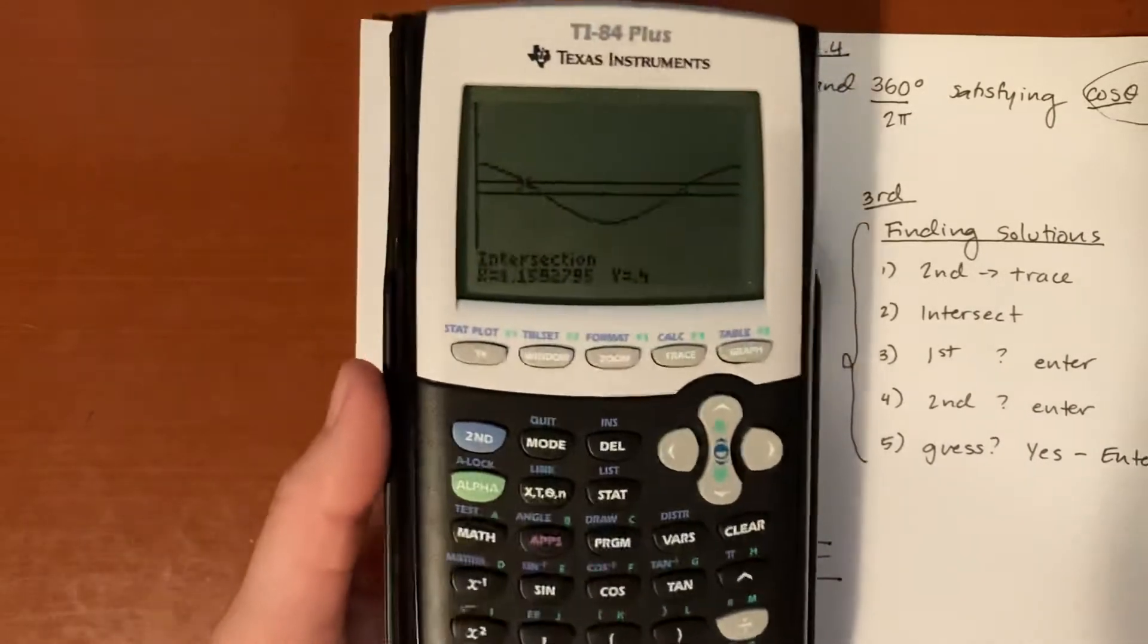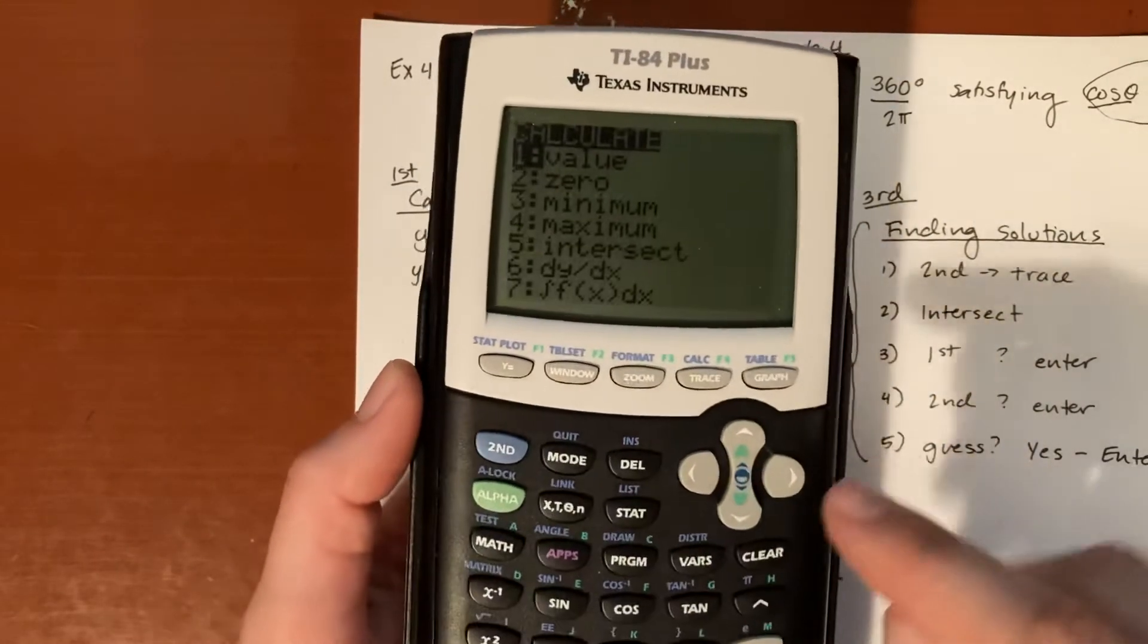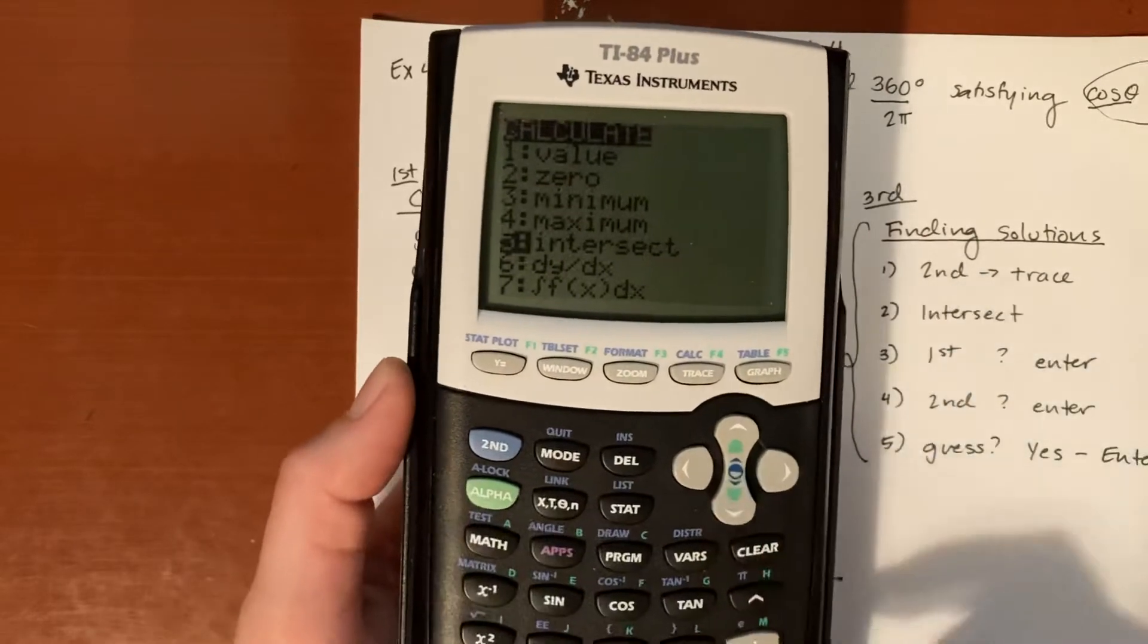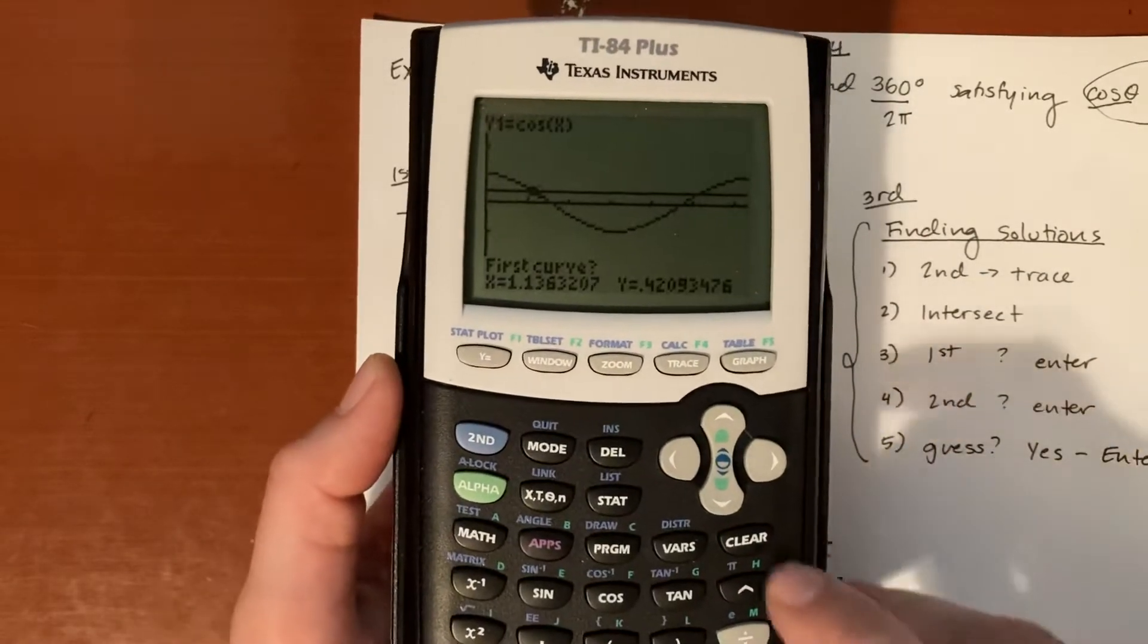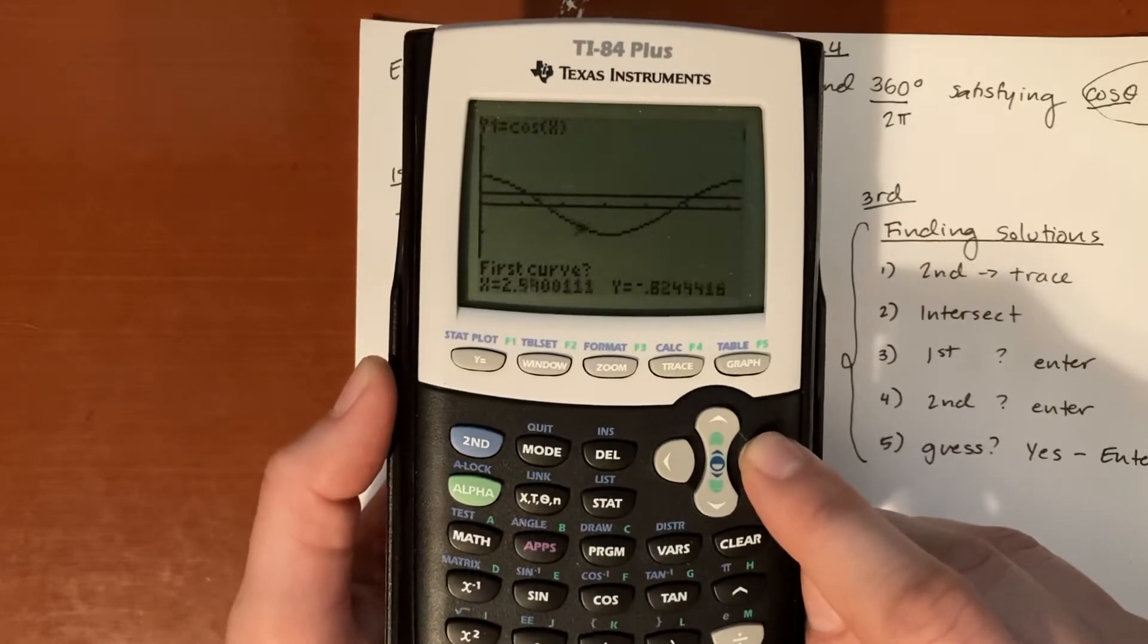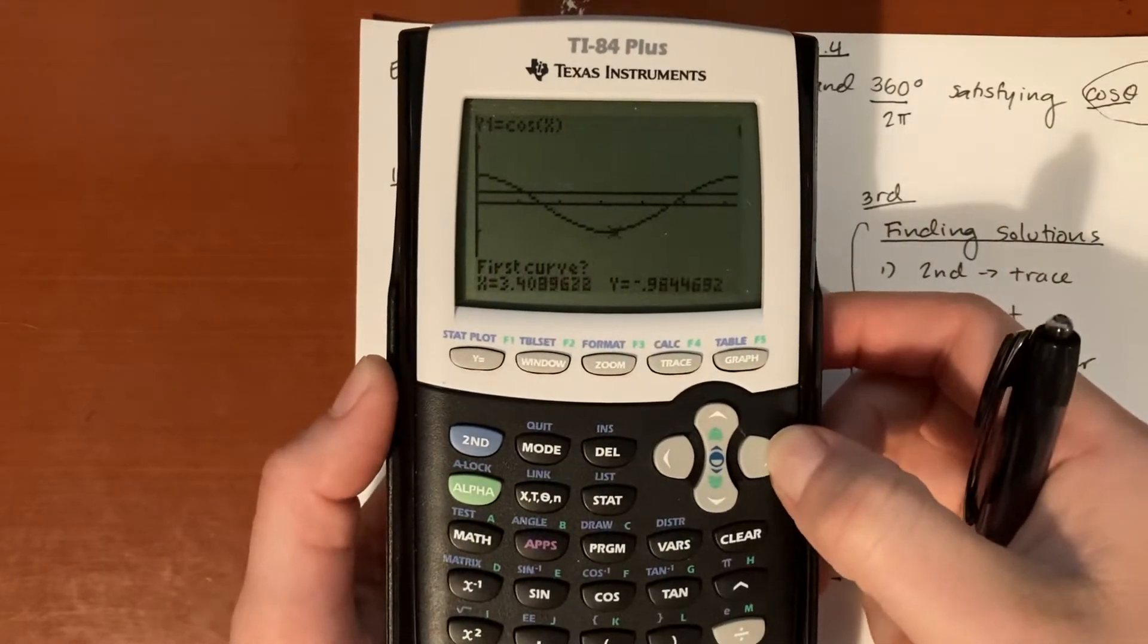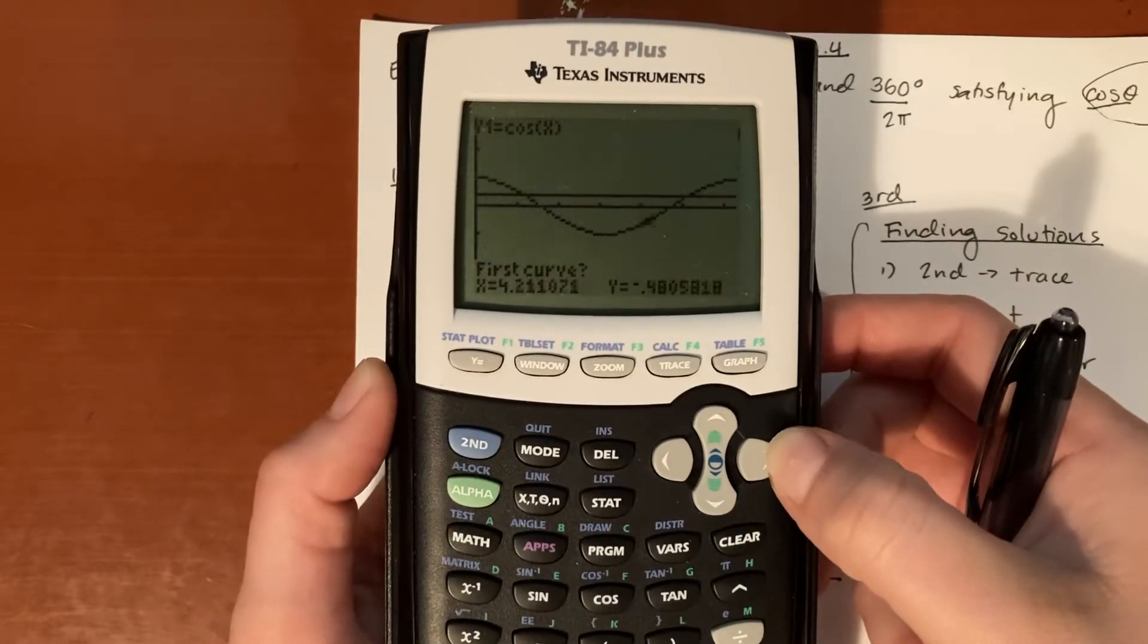Same thing, we're going to go ahead and do second trace, and now we're going to try to find the intersection of the other value. So we'll go ahead and move over to here, closer to the other intersection, because if you did it in the same spot it would give you that intersection there. So to find the other one, we're going to move closer to it, keep hitting that right arrow.